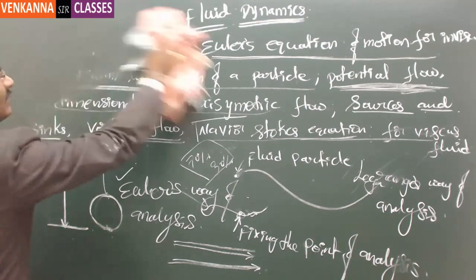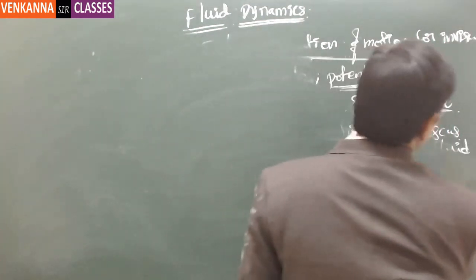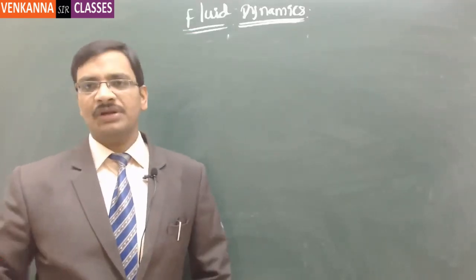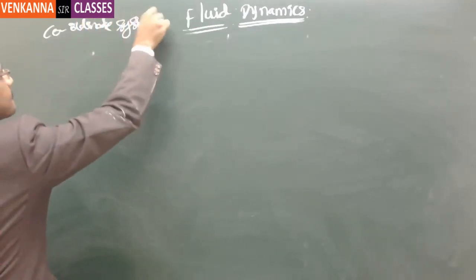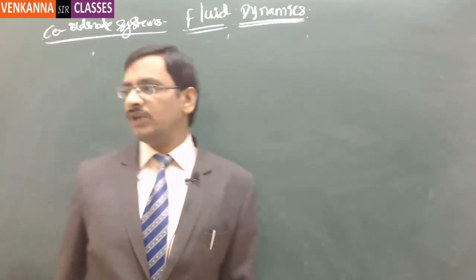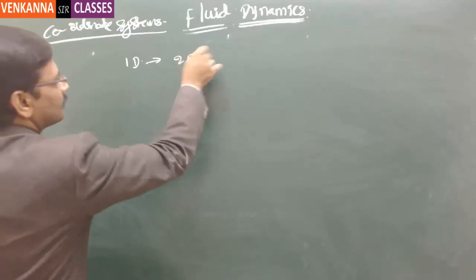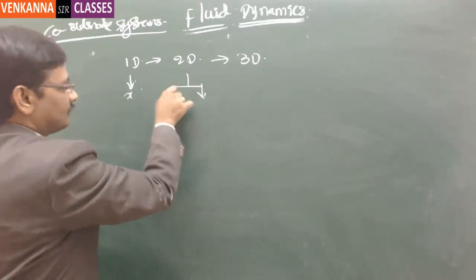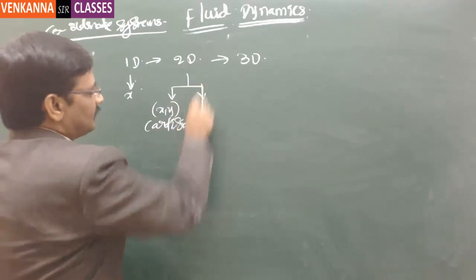Now I will give some basic prerequisite concepts for this topic. One important concept is the coordinate system, which many people have been asking about. Let me classify coordinate systems: one-dimensional, two-dimensional, and three-dimensional. One-dimensional is just a single line — x. In two-dimensional, we have the Cartesian coordinate system and the polar coordinate system.